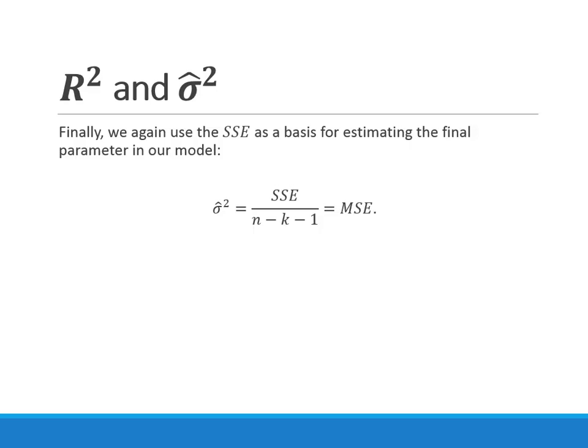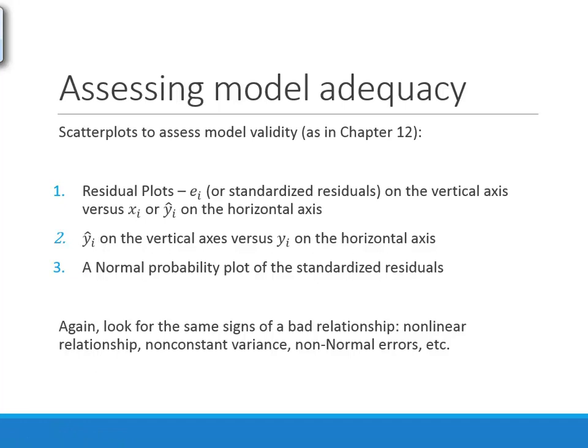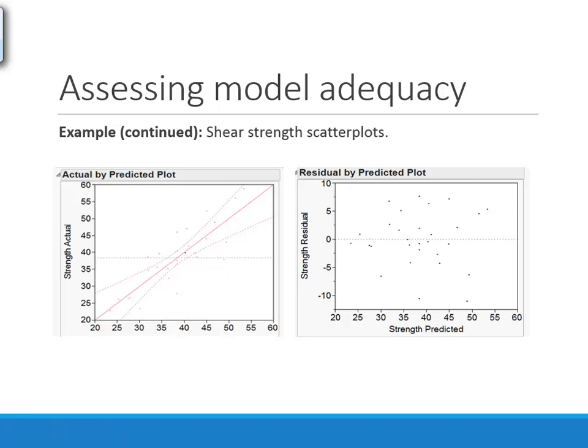Assessing model adequacy — same as in simple linear regression, we check that our modeling assumptions are appropriate by looking at residual plots. We look at residuals versus predicted Y values or versus the X's, we plot Y-hat against observed Y values, and we look at a normal probability plot for standardized residuals. We're looking for the same signs of problems: non-linearity, non-constant variance, or non-normal errors.